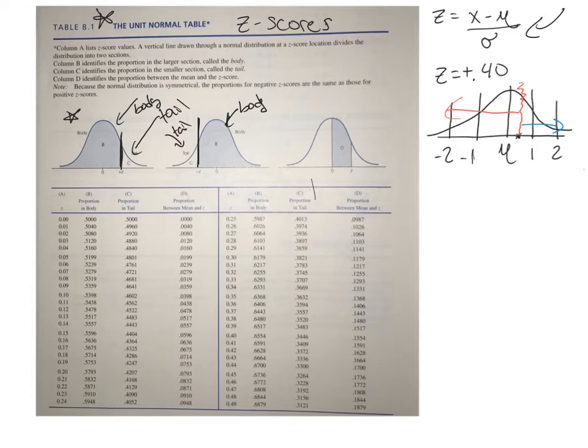You have a couple different columns. You have column A right here, and it's two-sided. They just put them right by each other so it wouldn't take up so much room. This is not a continuation, this is like a separate page. Column A is going to be your z-score. That's where you're going to find your z-score.